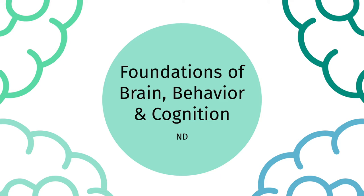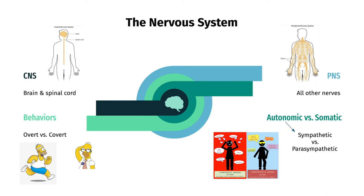Welcome to this crash course on the foundations of brain, behavior, and cognition. Our nervous system receives, processes, stores, and produces information, and consists of two parts.